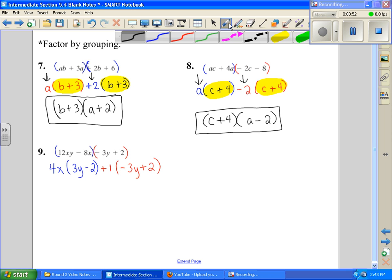Now, when I look at my parenthesis, 3y minus 2 and a negative 3y plus 2, the only difference between those is they're exact opposite. So what I'm going to do to fix that is I'm going to change this to a negative 1, and then change all of these signs behind it. So I'm going to leave this front parenthesis alone, and then check and see if they match now.